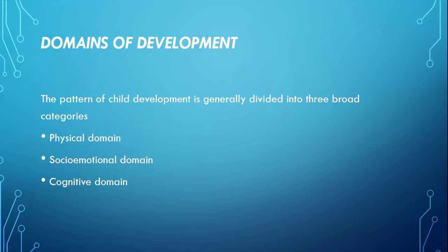تیسری ہے cognitive domain۔ Cognitive domain میں جو تبدیلیاں ہم note کرتے ہیں وہ ہیں intellectual abilities، thinking skills، intelligence، creativity، attention، memory اور language۔ یہ ساری چیزیں cognitive domain میں آتی ہیں۔